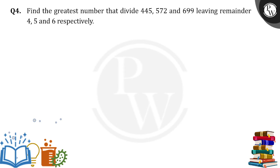Okay, so if they are leaving the remainders, then what are the exact numbers? 445 minus 4 is 441, right? And 572 minus 5 is equal to 567.